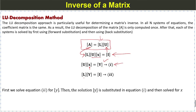We set Ly = b as the second equation, where b corresponds to each column of the identity matrix. First we solve the second equation for y, then substitute the solution for y into the first equation UX = y and solve for x. This gives us each column of the inverse matrix. Now we will apply this method to find the inverse of the matrix.